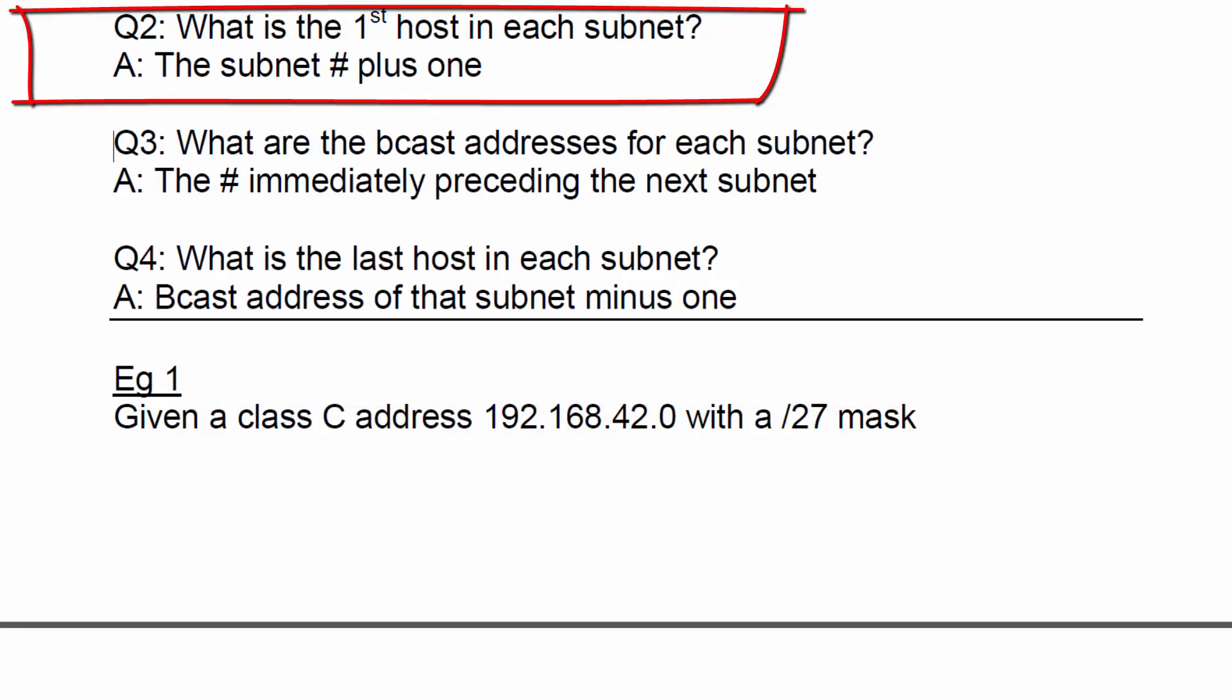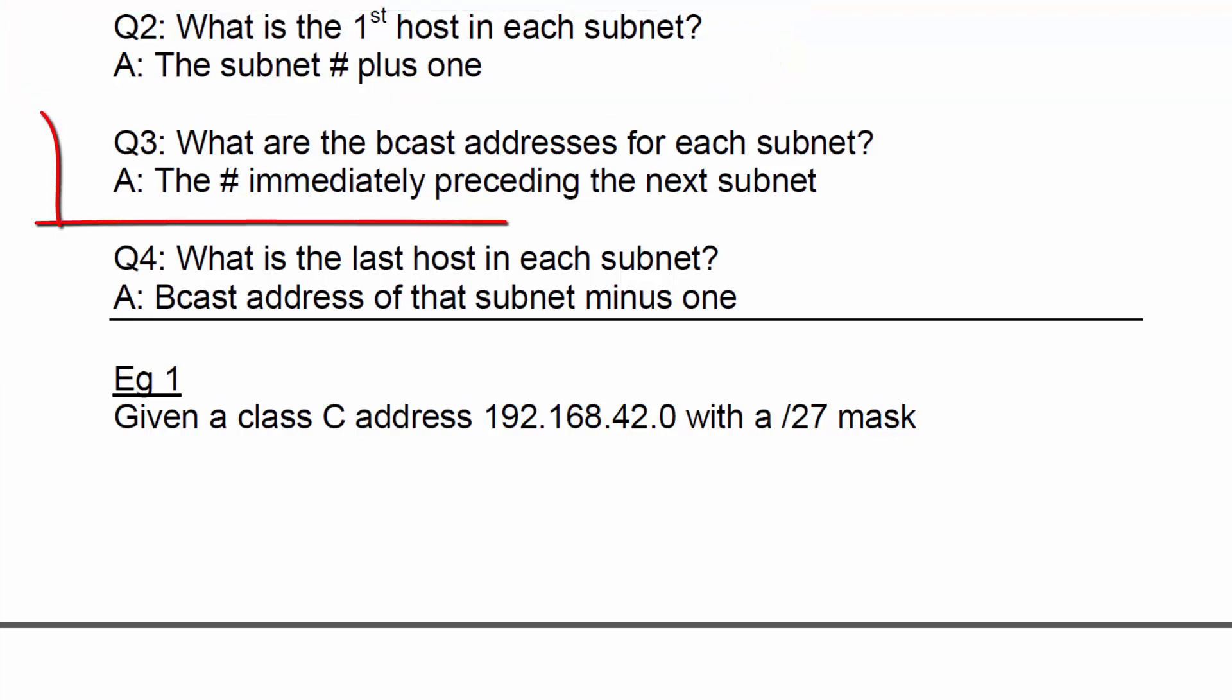The second question that they could ask you is, what is the first host in each subnet? And that is the subnet number plus one. The third question they could ask you is, what is the broadcast address for each subnet? And that is the number immediately preceding the next subnet. And the last question that they could ask you is, what is the last host in each subnet? And that's the broadcast address of that subnet minus one.